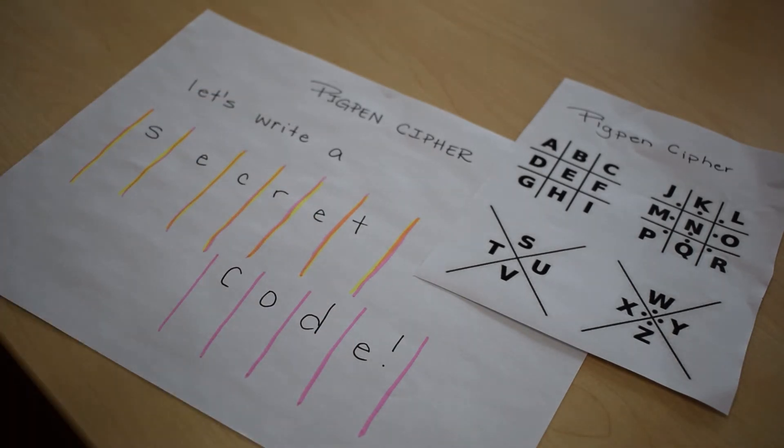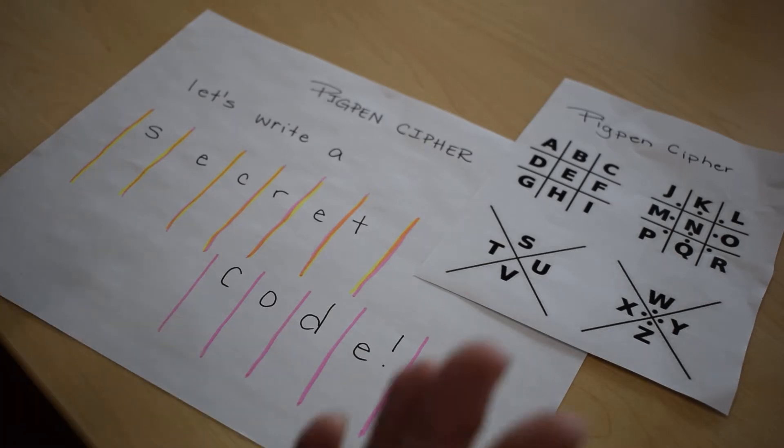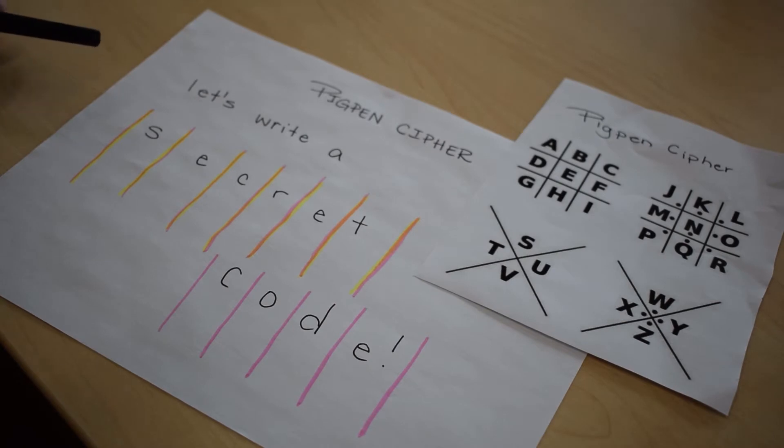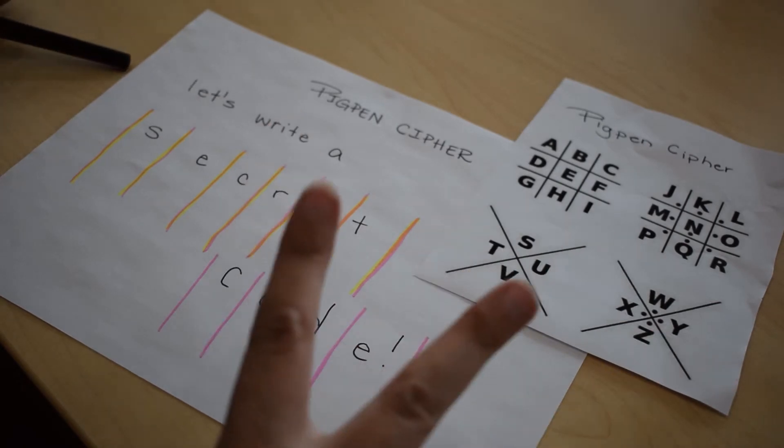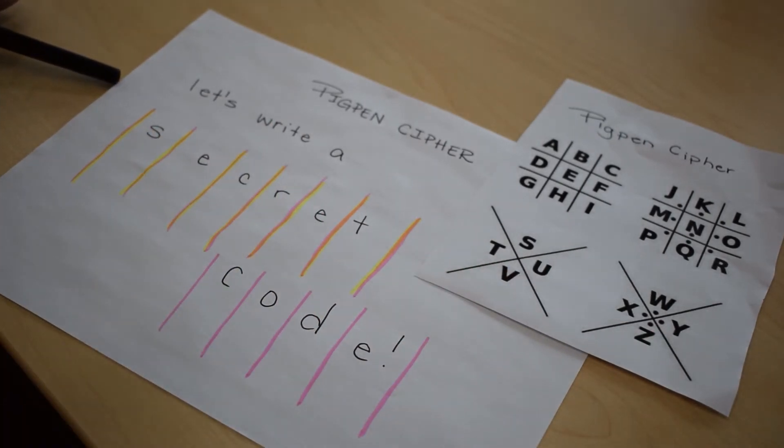There are many applications for secret codes. Spies have used it to send messages so they don't get interrupted or read by someone they weren't intended for, and today we're just using it for fun. Parts of a secret code can have many different components depending on how complex your code is, but there's really two key components.